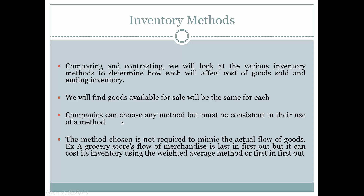Companies can choose any method they desire, but they must be consistent — they can't switch between methods month to month. Additionally, the method chosen is not required to mimic the actual flow of goods. For example, a grocery store's physical flow is last in first out so fresh items sell first, but it can cost its inventory using weighted average or first in first out.